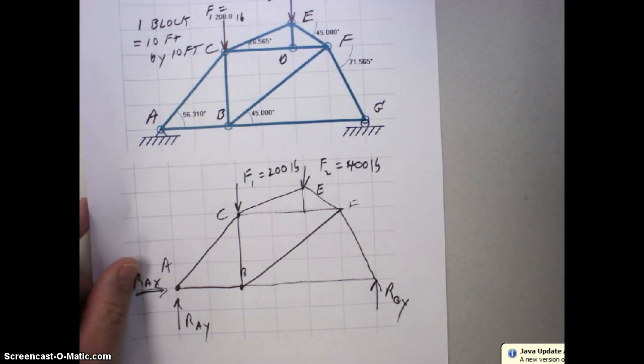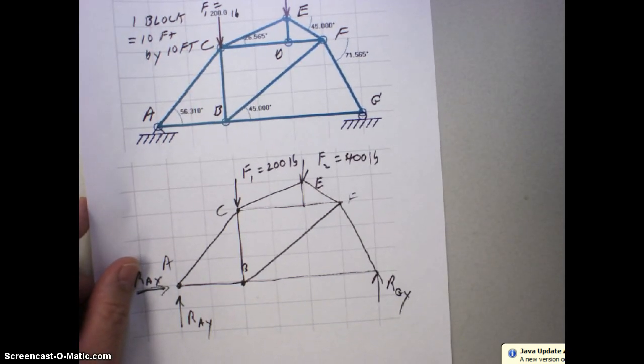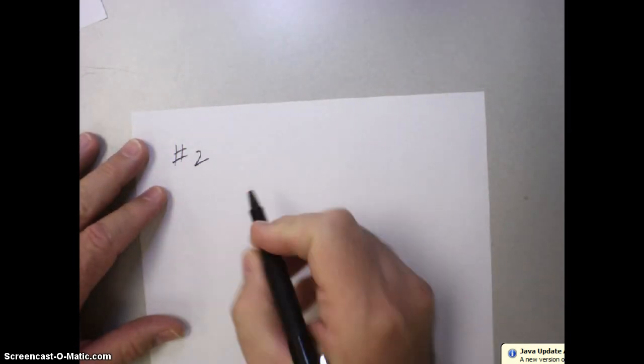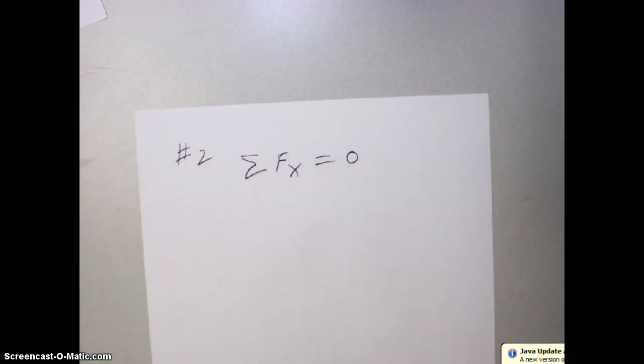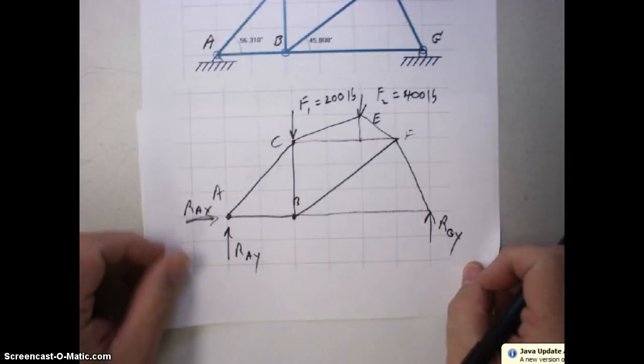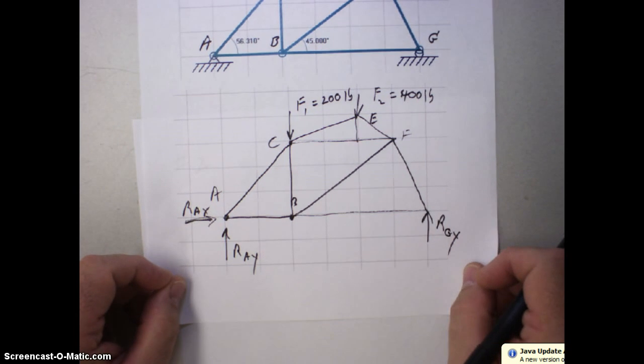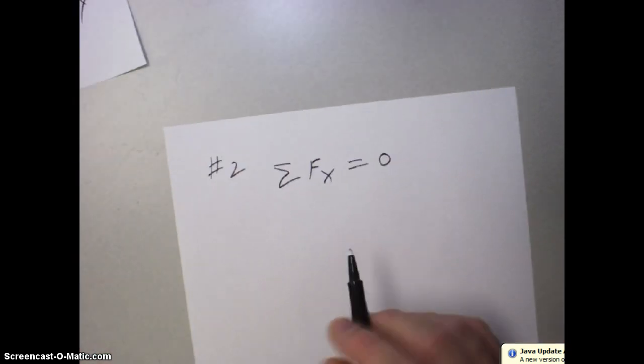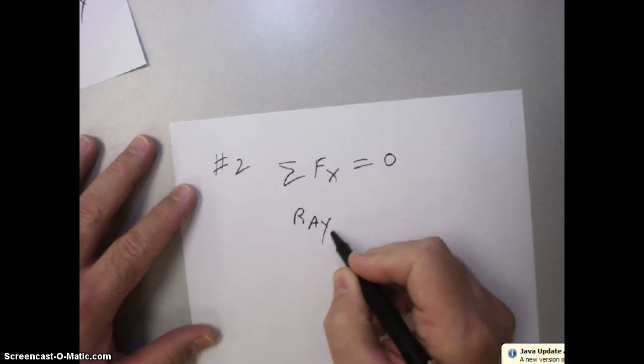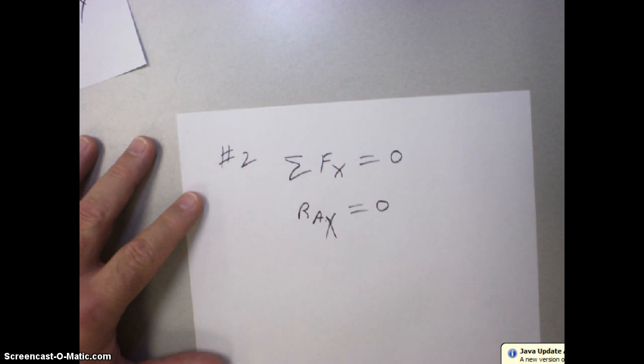So let's go ahead and start working the problem. Now remember, I'm going to be referring to this free body diagram extensively, so keep it handy. So that was step one. So step two is looking at the sum of the forces in the X direction and setting them equal to zero. Well, most of these, it's obvious we have one force here in the X direction. That's RAX. So RAX is equal to zero. That was step two.